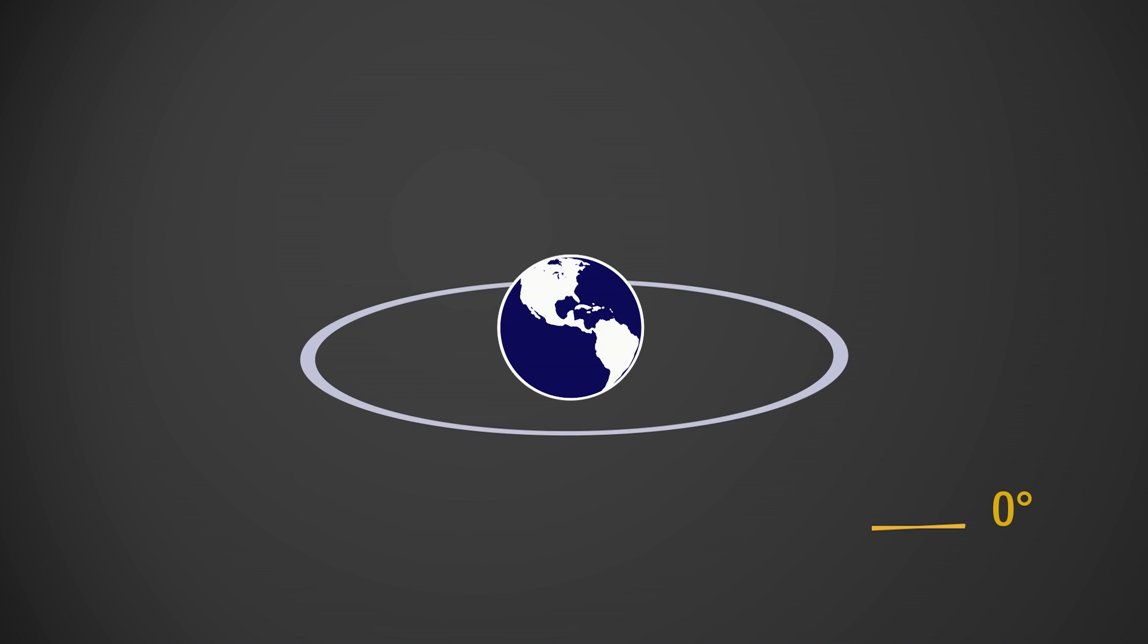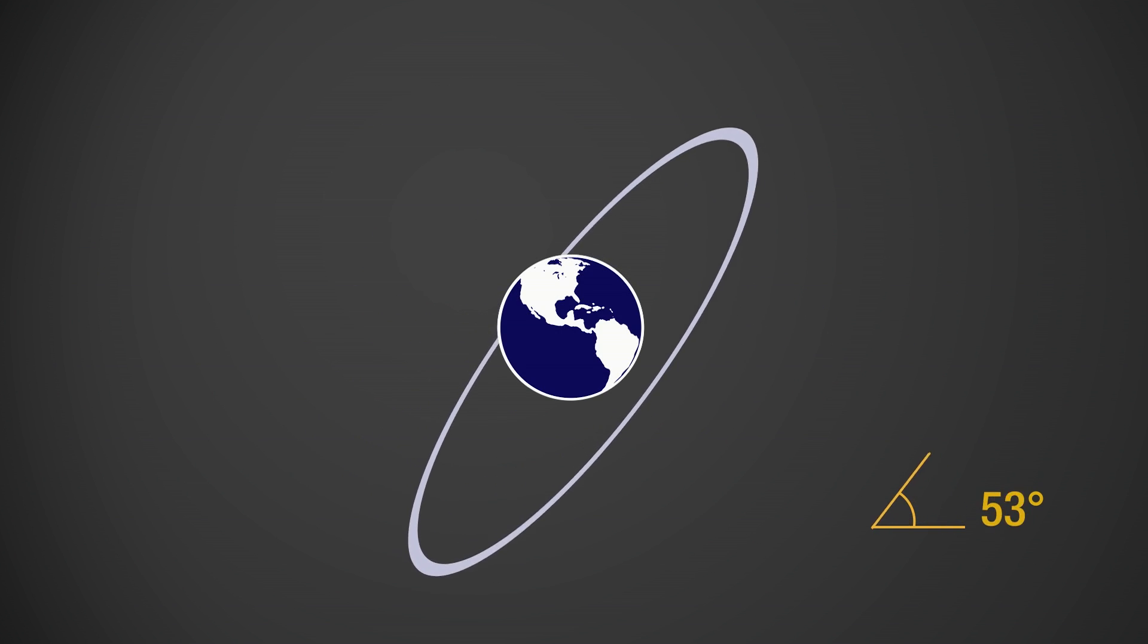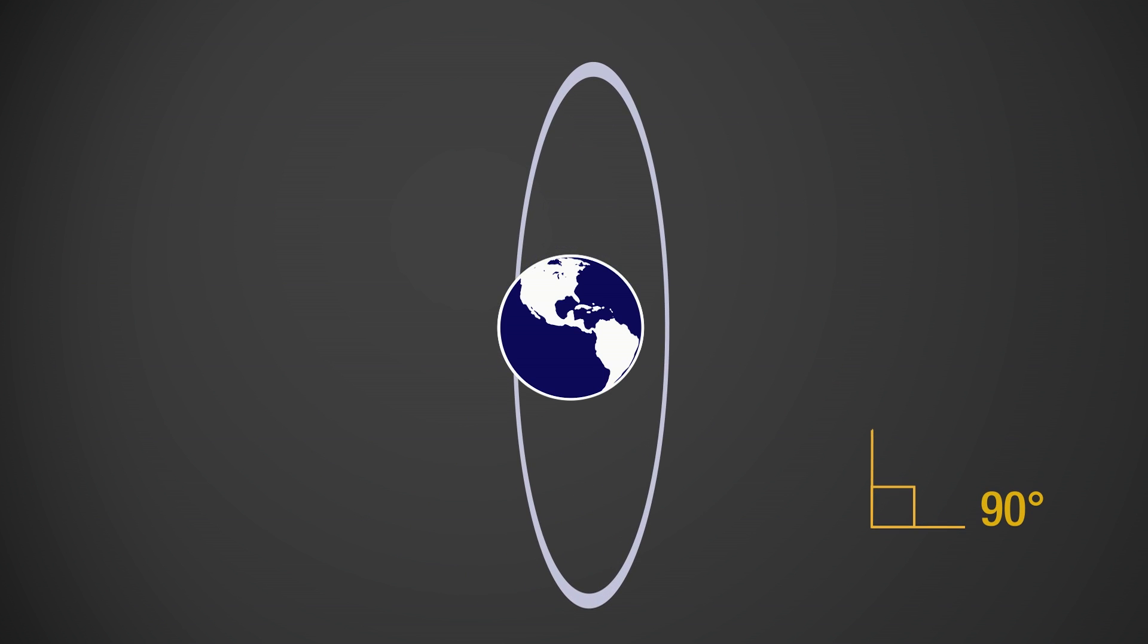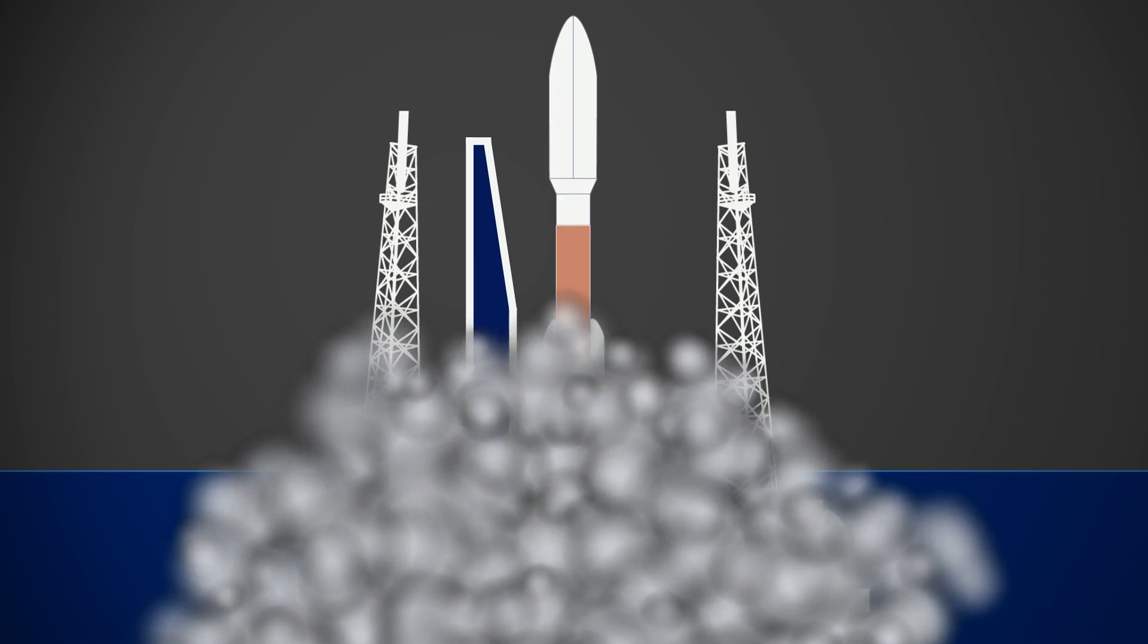As for the inclination, if it's zero degrees, the orbit will be constantly over the equator, and if it's 90 degrees, the orbit will be polar, passing over the north and south poles. Alright, I'm ready!